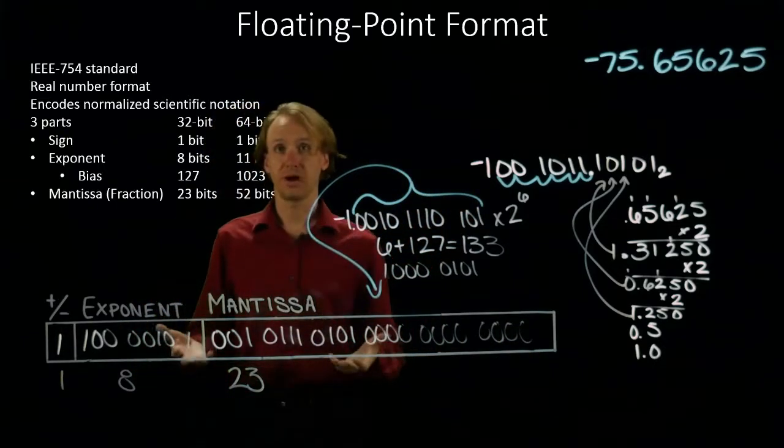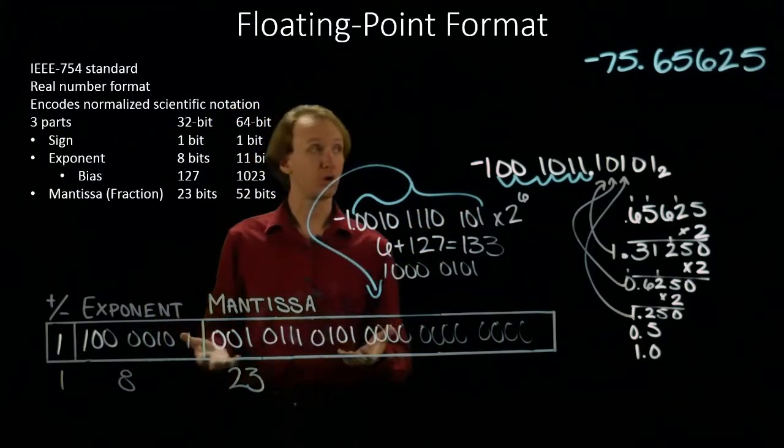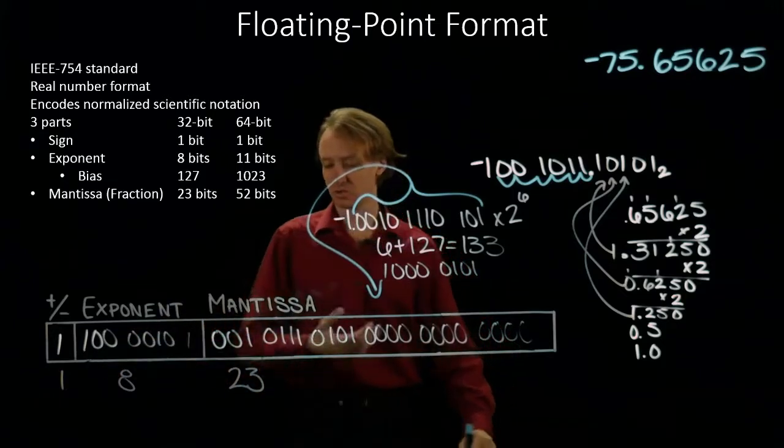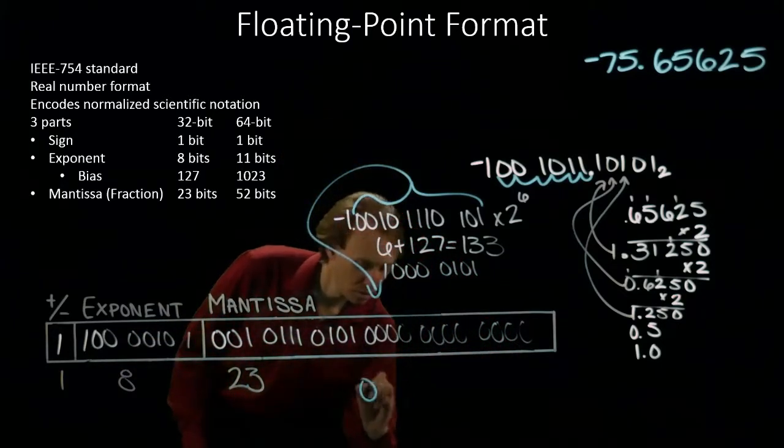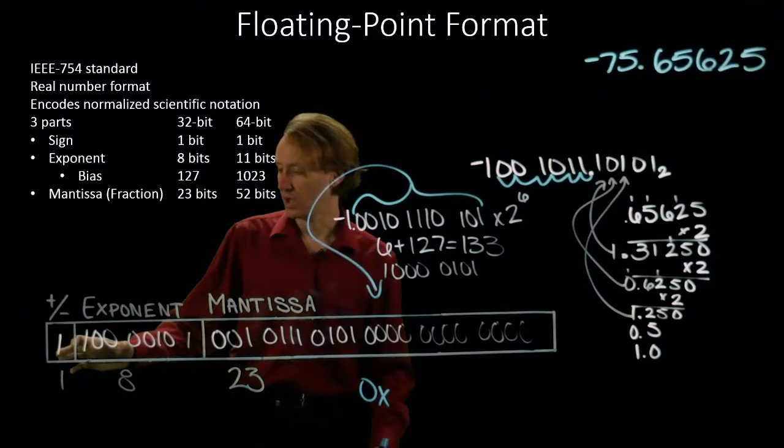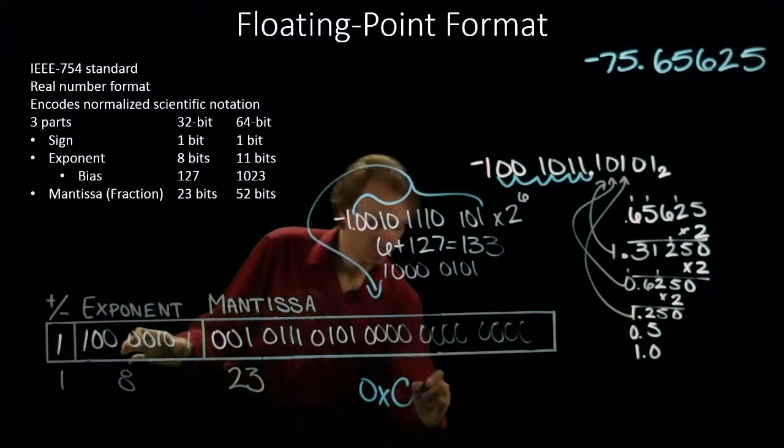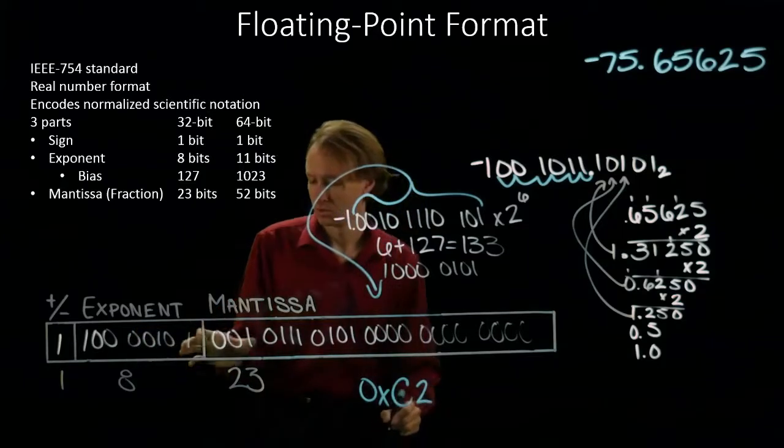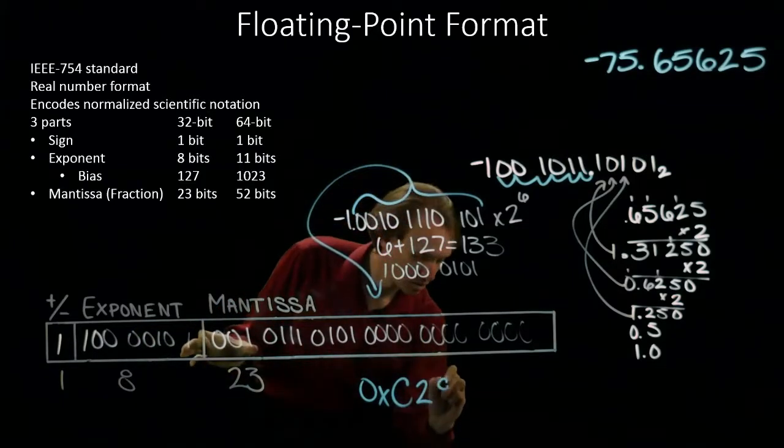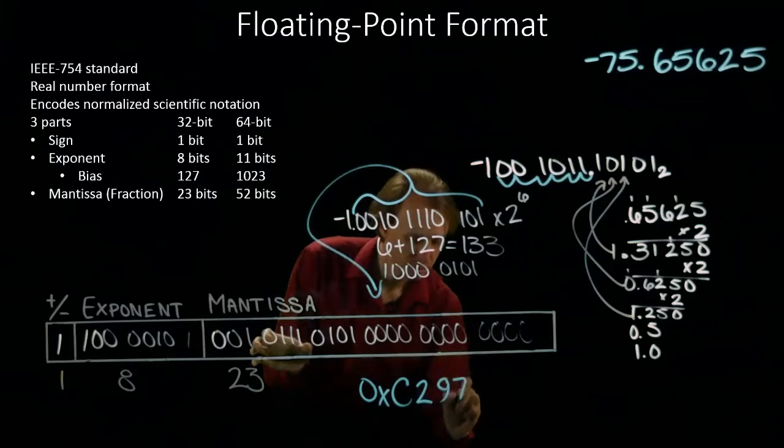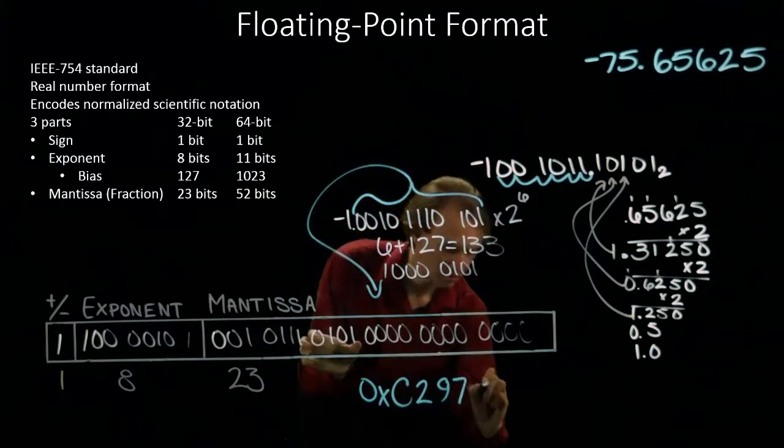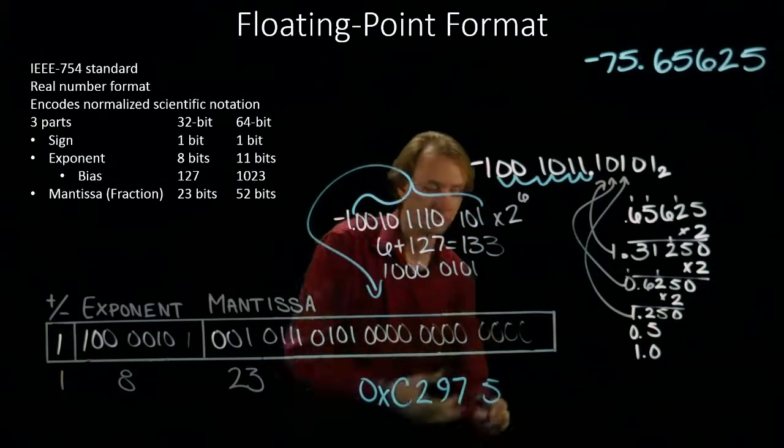So there's the binary version of my floating point number. If I convert this to hexadecimal, I will have C2975000. That would be the hexadecimal form of negative 75.65625 in floating point format.